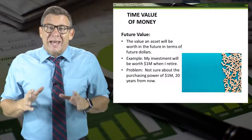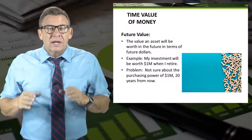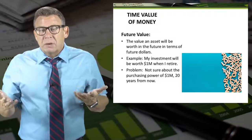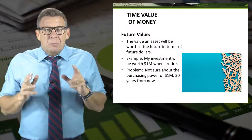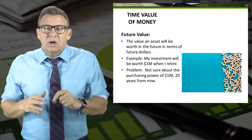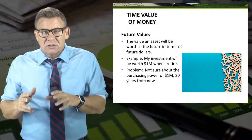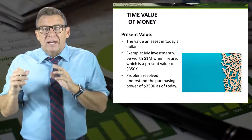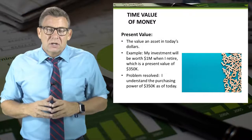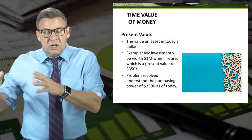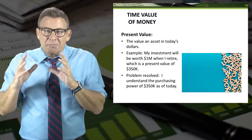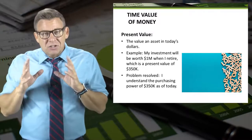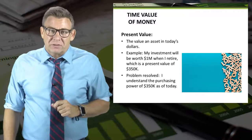Future value is the value an asset will be worth in the future in terms of future dollars — for example, an investment will be worth $1 million when I retire. The problem with future value is we aren't sure about the purchasing power of $1 million 20 years from now. Present value is the value of an asset in today's dollars. So if my investment has a present value of $350,000, the problem is resolved because I understand the purchasing power of $350,000 today.